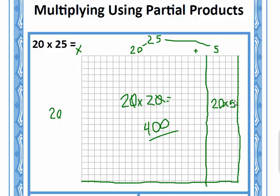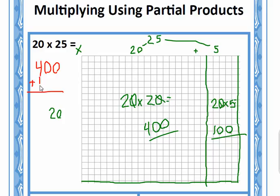Now this one — we need to find the partial product of this area. 5 times 20, how many zeros? We have one zero in our factors, so one zero in our product. 5 times 2 is going to be 10, so we have at least one zero — so 100. Our partial products are 400 and 100. Now what do I do? I add them, because I'm adding all of these squares plus all of these squares. That is why we add the partial products — we found the total amount of squares in each section and we just add those together to get 500.